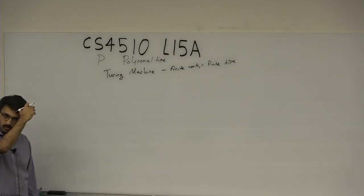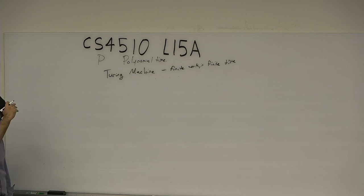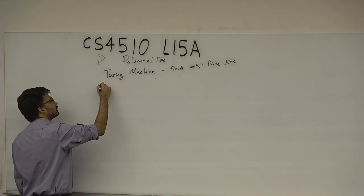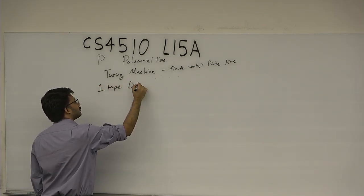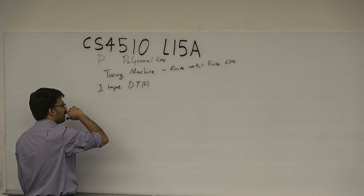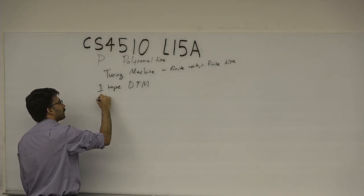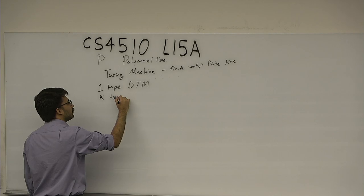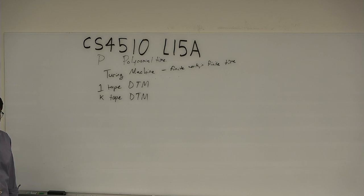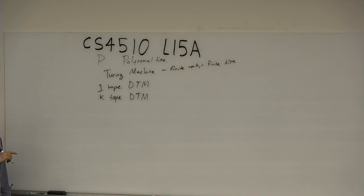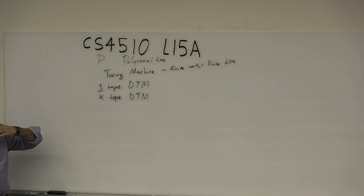But which Turing machine? We actually gave several definitions: the classic one-tape deterministic Turing machine, and a K-tape deterministic Turing machine — we proved these were all equivalent to each other. But the problem is, now we're talking about resource. We have to determine how equivalent they are. Maybe one is faster than the other. Certainly they can do the same thing, but one might be faster.